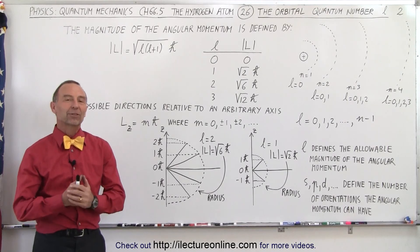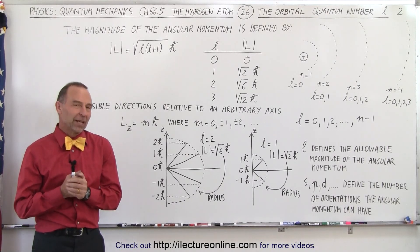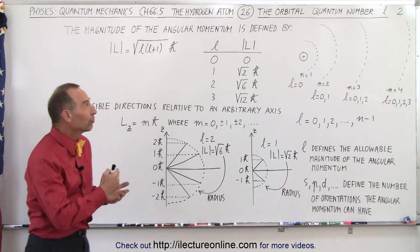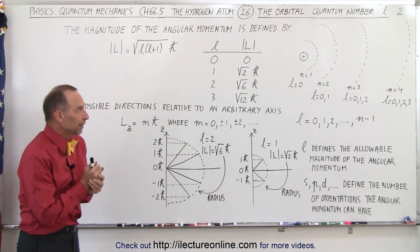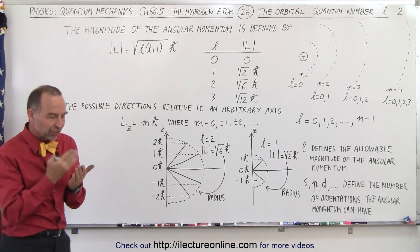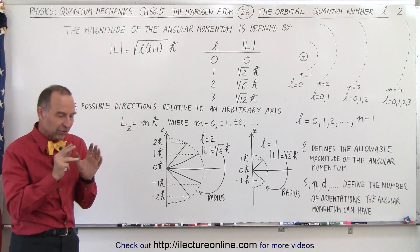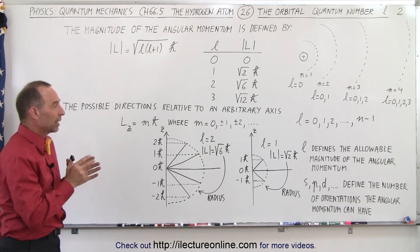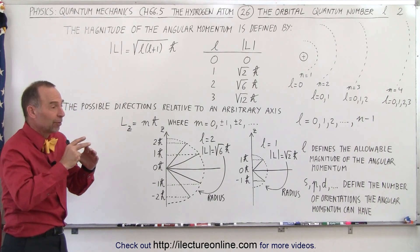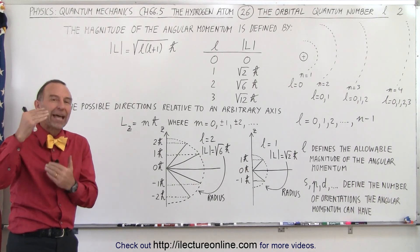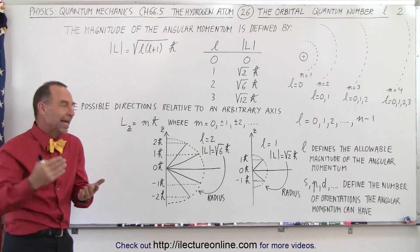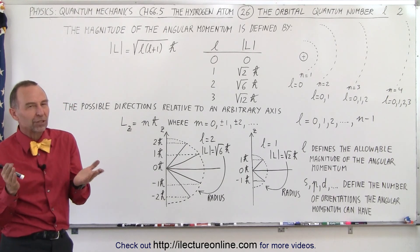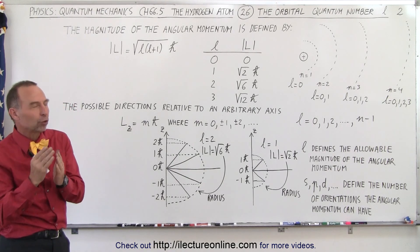Welcome to our lecture online. Now let's take a closer look at the orbital quantum number L. L represents something about the angular momentum of the electron. It represents both the magnitude that the angular momentum can have and the direction, and now we're going to take a little closer look at that.